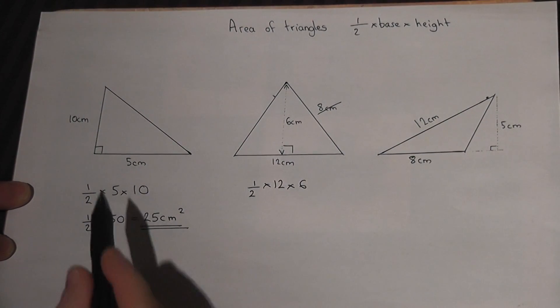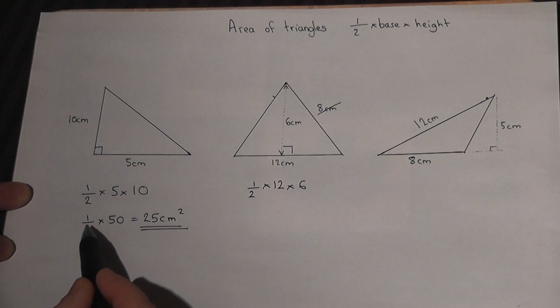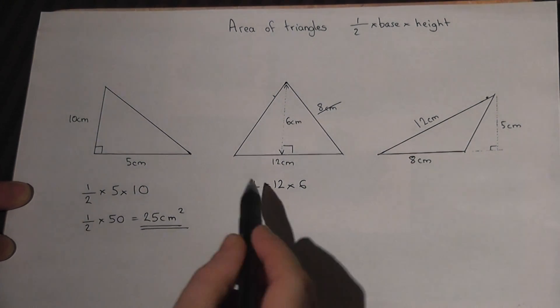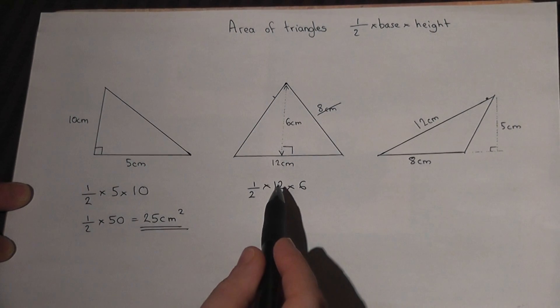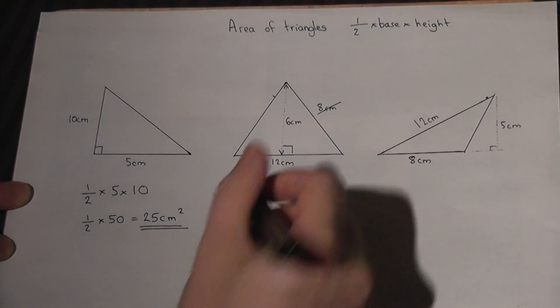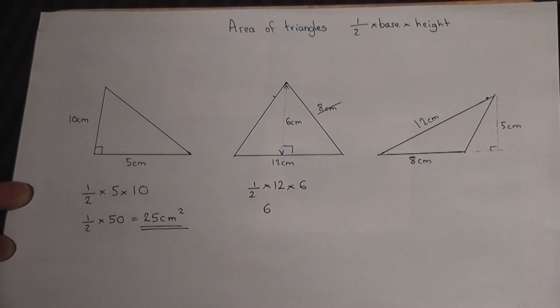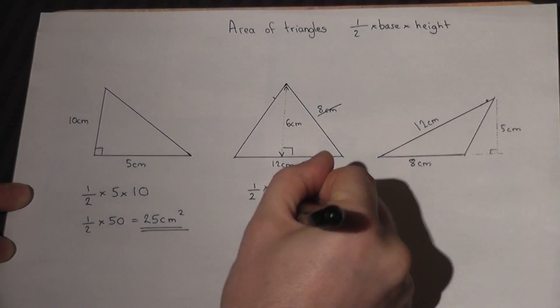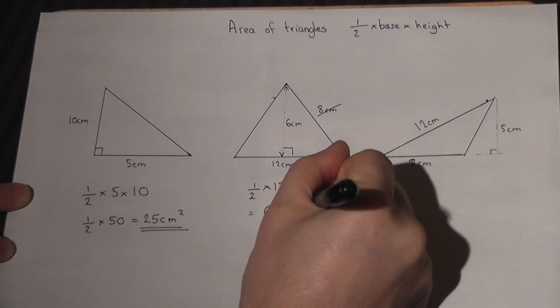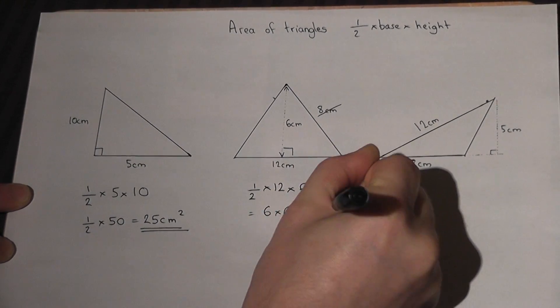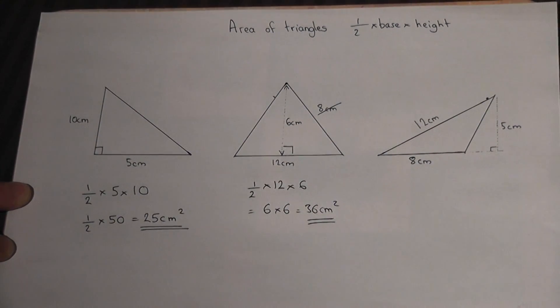Now in the first one, I did 5 times 10 first, then halved it. It was easier, but in this one I think I'll halve the 12 first. I can halve 12 easily. 6 times 6, 36 centimeters squared. Again, don't forget the units.